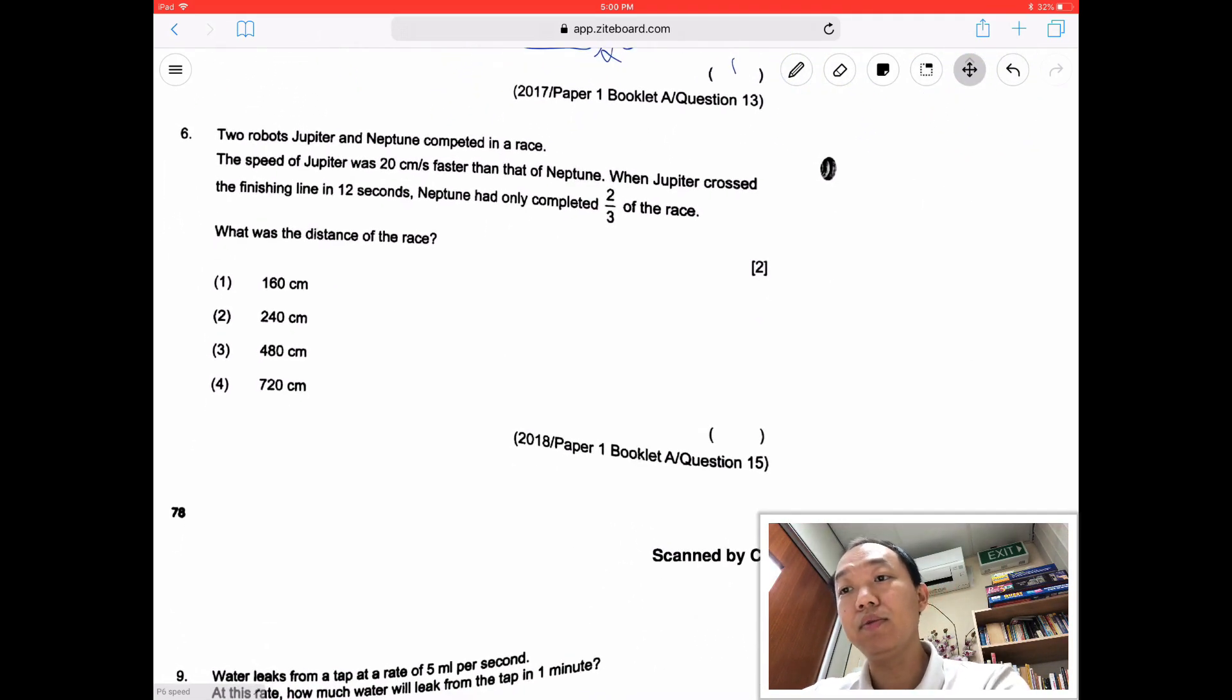Let's take a look at the next one. So here's another speed question from last year's PSLE paper. So two robots, Jupiter and Neptune, completed a race. Speed of Jupiter was 20 cm per second faster than Neptune. So when Jupiter crossed the finishing line in 12 seconds, Neptune had only completed 2/3 of the race. So the speed of Jupiter was 20. When Jupiter crossed the finishing line in 12 seconds, Jupiter finished in 12 seconds.